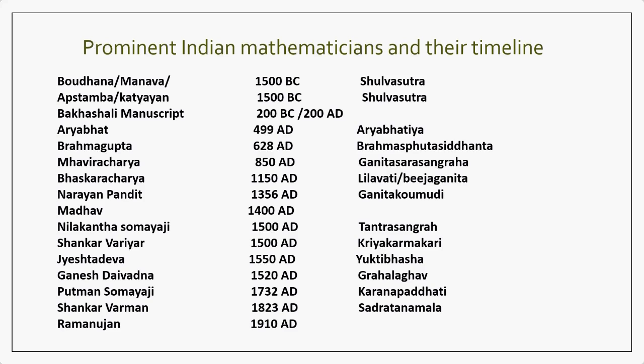Then Bhaskaracharya comes, whose books were used for a whole century. The basic mathematics he has put in beautiful poems and examples in Lilavati and Bijaganita. Then the center of mathematics shifted towards South India and we can see many people from South India like Shankar Variar, Madhava, Nilakantha Somayaji, Jyeshthadeva, and Ganesh Daivadnya from Maharashtra who wrote Grahalagava at age 13.